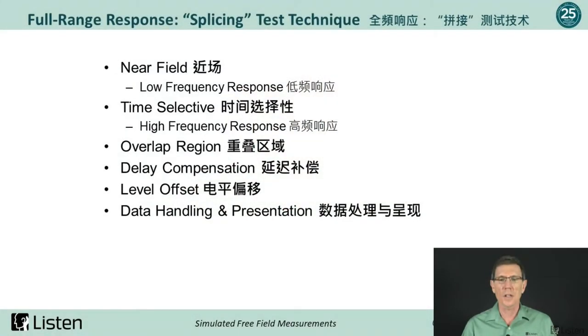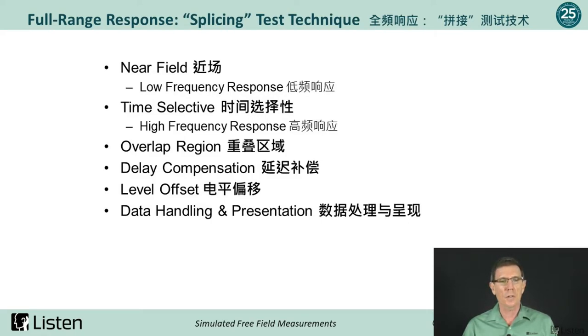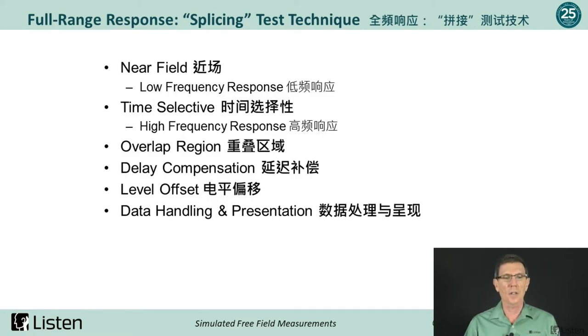By taking the near-field low-frequency response and splicing it to the time-windowed high-frequency far-field response, it is possible to get an overall wideband response. The answer is yes, with some careful post-processing of the data. The steps include an overlap region, a delay compensation, and a level offset between the far-field and the near-field, and then presenting the data in its final format.